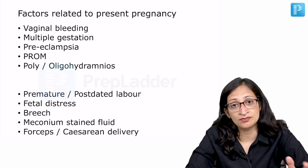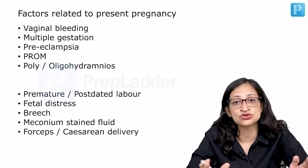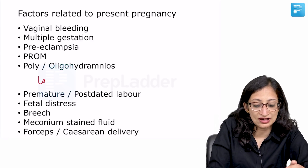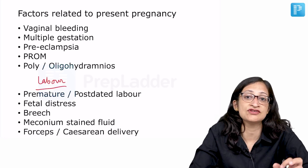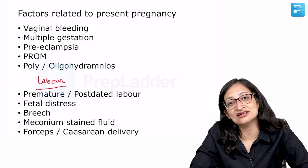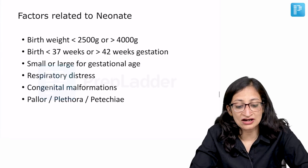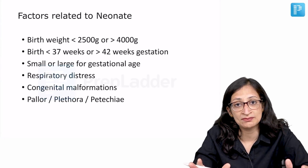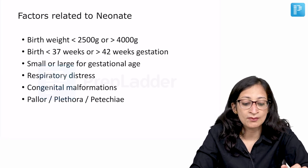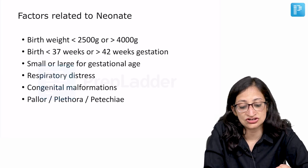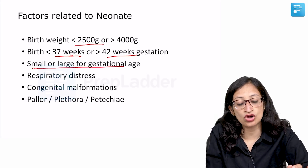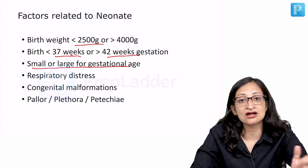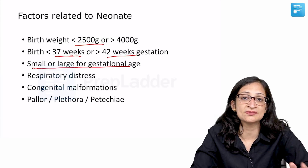Present pregnancy risk factors include vaginal bleeding, multiple gestation (twins, triplets), preeclampsia, premature rupture of membranes, polyhydramnios or oligohydramnios, premature or post-dated labor, fetal distress during labor, breech delivery, meconium-stained fluid, and assisted or cesarean delivery. Neonatal factors include birth weight less than 2500 g or more than 4000 g, gestational age less than 37 or ≥42 weeks, small or large for gestational age, respiratory distress, congenital malformations, and the three Ps — pallor, plethora, or petechiae indicating thrombocytopenia.